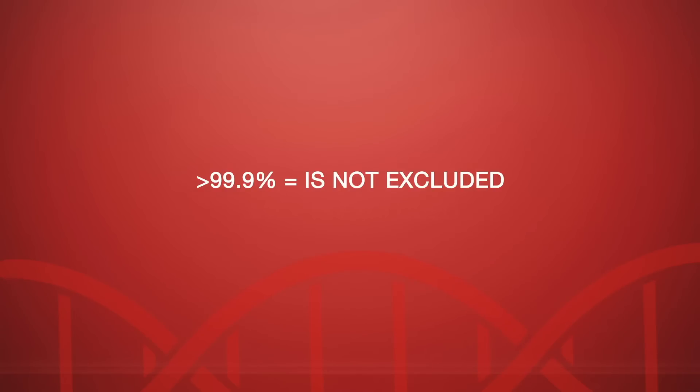The probability of paternity is based on the combined paternity index and is calculated by our genetic scientists using a mathematical formula widely used and accepted in DNA relationship testing. If the man tested is considered the biological father, then the percentage of probability is 99.9% or higher. If he is not considered the biological father, then the probability of paternity is 0%. Statistics from the general population are used to determine the probability of paternity, which is why that probability can never be 100%. To get 100%, we'd have to test every man in the world with the same racial background, which is obviously impossible.